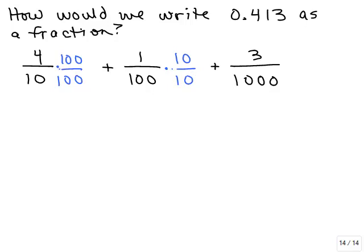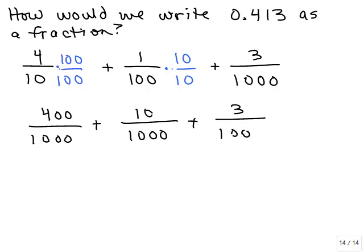So what does that give me now? This gives me 400 over 1,000 plus 10 over 1,000 plus 3 over 1,000. Now that I have a common denominator I can add the numerators, it's 413 thousandths. So this is how we write 0.413 as a fraction.